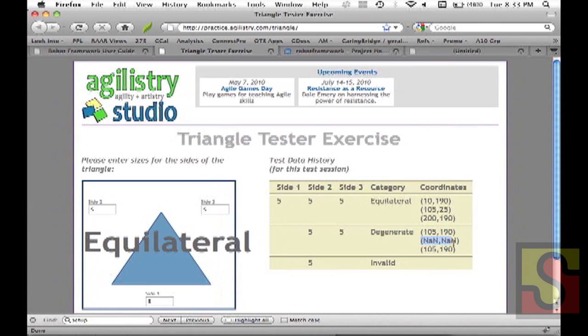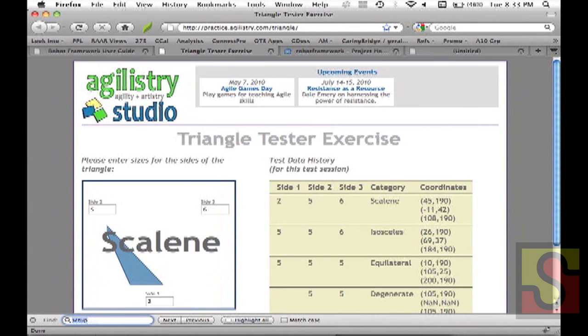You see how these say not a number. That shouldn't happen either actually. But the particular case that fails is, let's see if I get this right, 5, 6, 2 I think. Yeah, there it's going off the screen and we've got a negative 11. That's what's failing and it's catching that failure not by doing a bitmap compare on the triangle but instead by looking at the coordinates that are reported in the UI.